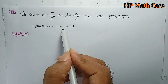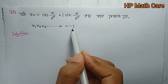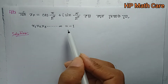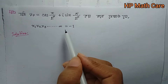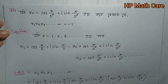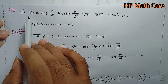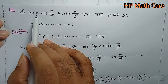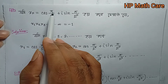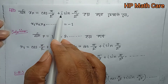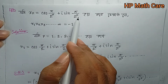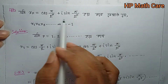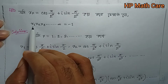The right-hand term equals minus one. Here x equals cos(π/2 to the power r) plus i sin(π/2 to the power r), and x1 times x2 times x3 up to infinity equals minus one.